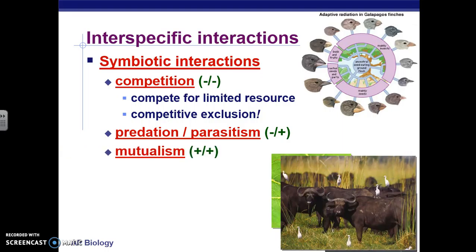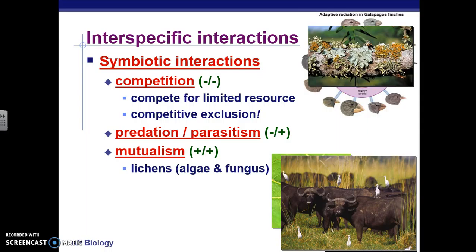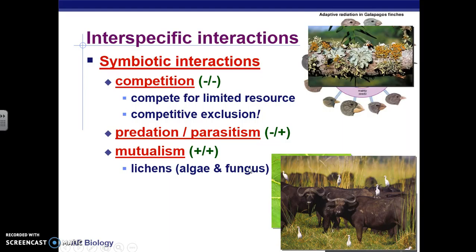Then we have mutualism, where both organisms benefit. The classic example of mutualism is a lichen — a relationship between an algae and a fungus. In this relationship, the algae and fungus live almost like one organism, closely embedded together. The algae can do photosynthesis, so it provides food for the fungus. The fungus is really good at absorbing water and nutrients, which it can give to the algae. The fungus also provides protection for the algae, so both organisms benefit from the relationship.